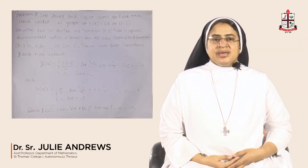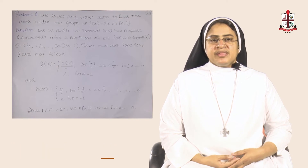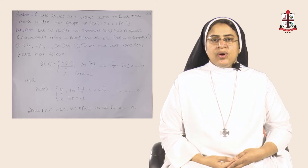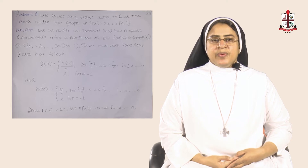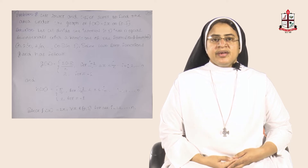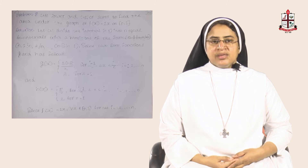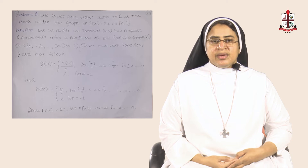We are doing a problem to find the lower and upper sums to find the area under the graph f(x) = 2x on the closed interval [0, 1]. Let us divide the given interval [0, 1] into n equal subintervals with the partitions of the form 0, 1/n, 2/n, ..., (n-1)/n, 1.